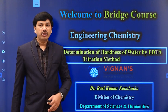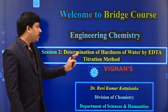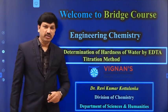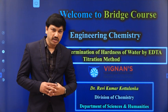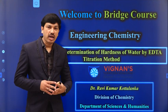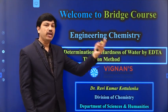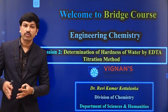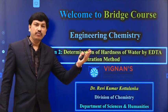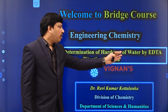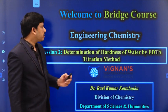Welcome to Bridge Course Engineering Chemistry, session 2. In this session, I'm going to discuss the determination of hardness of water by EDTA titration method. Most water samples have a combination of both temporary and permanent hardness, meaning they always have total hardness. We need to estimate this total hardness value to understand how to remove those salts and plan the purification process.